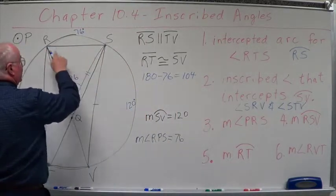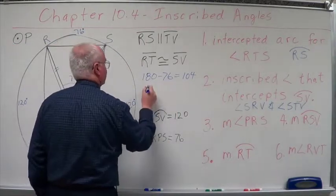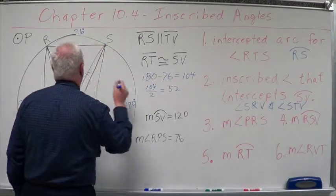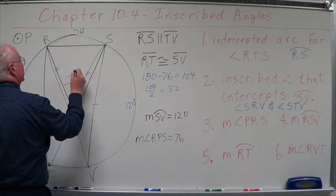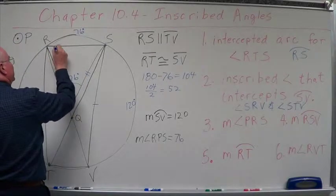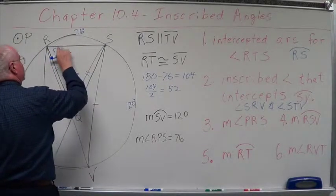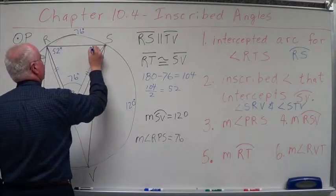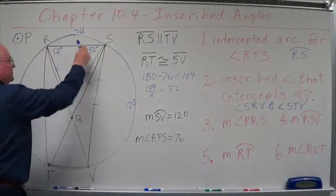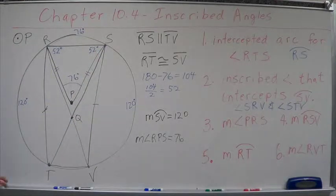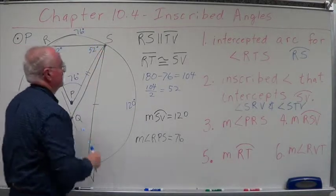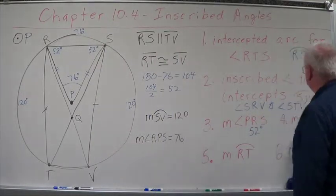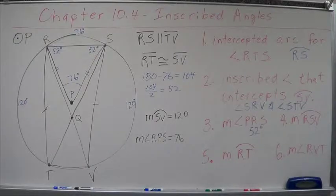180 minus 76 equals 104. Well, we've got two angles that have to equal 104. So 104 divided by 2 equals 52. So this is 76 degrees. This has to be 52 degrees. And this has to be 52 degrees. Add all those up and make sure that has it. And then we look at PRS. And this angle is 52 degrees.